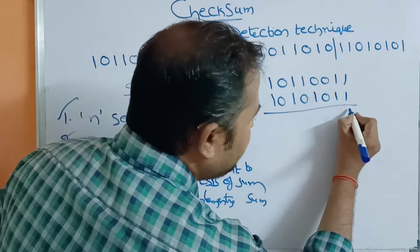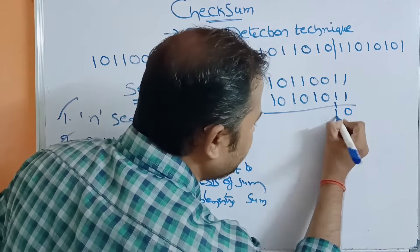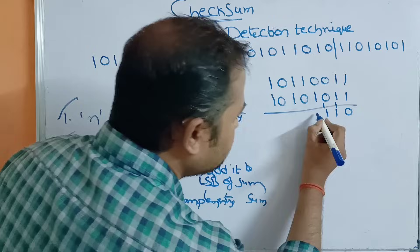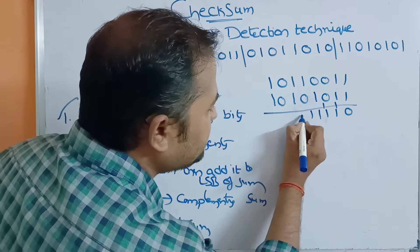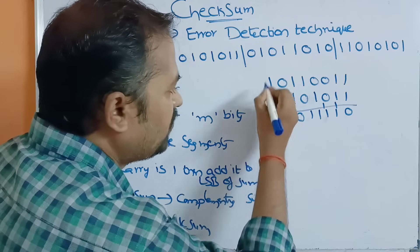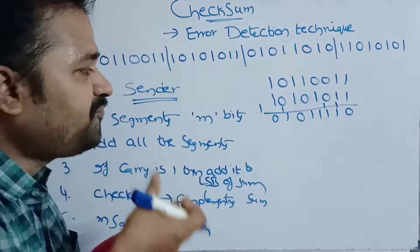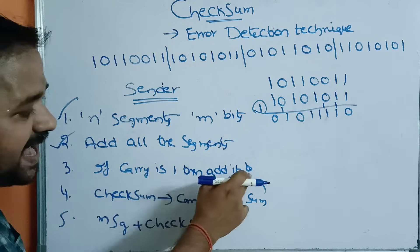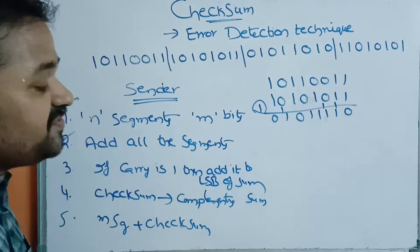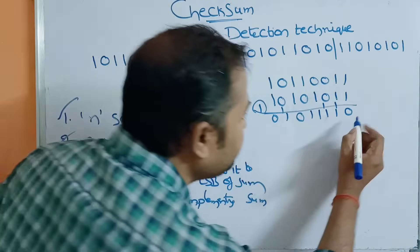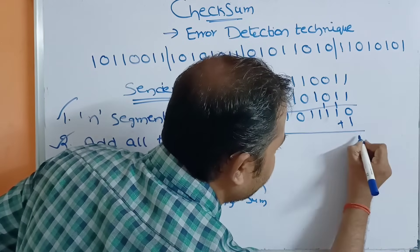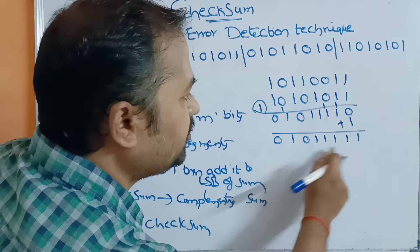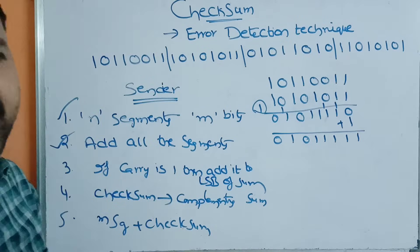We add the first two segments. 1 plus 1 gives 0 with carry 1; working through all bit positions, we get a sum. Since the carry is 1, we add it to the least significant bit of the sum, giving us 01010111 after the carry addition.